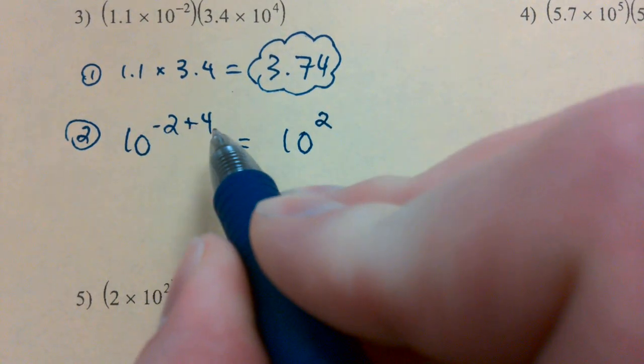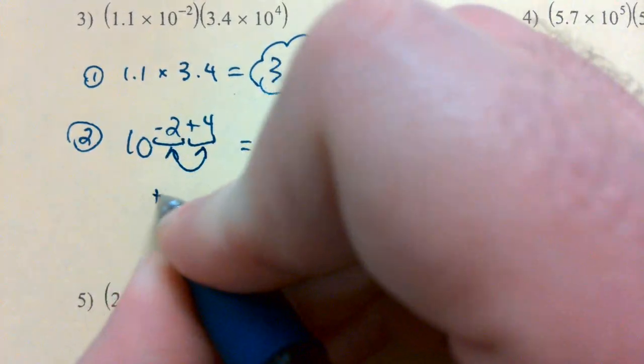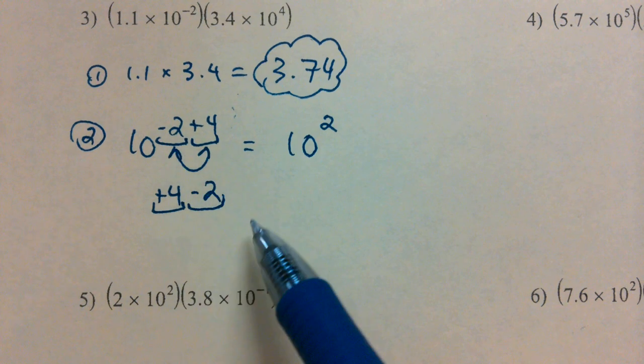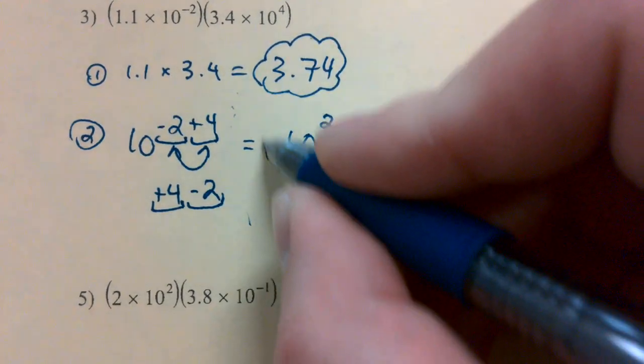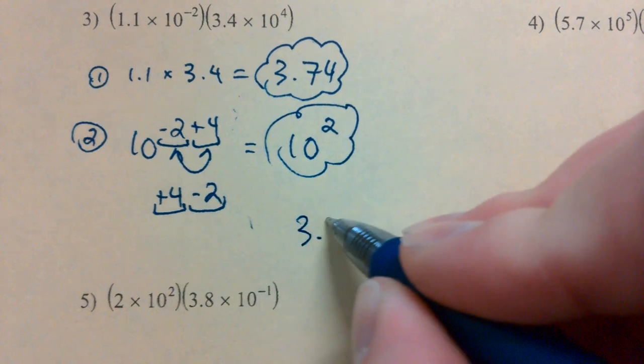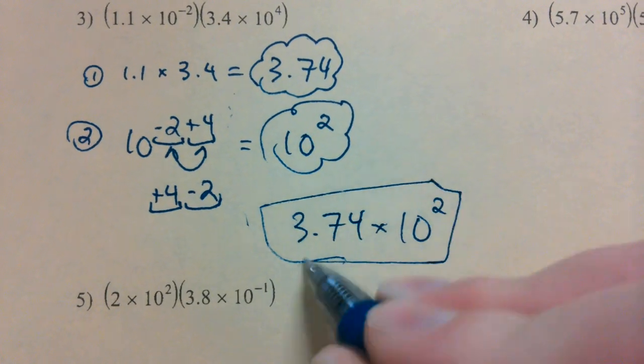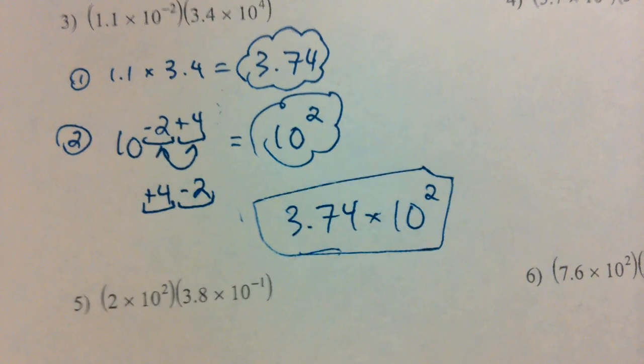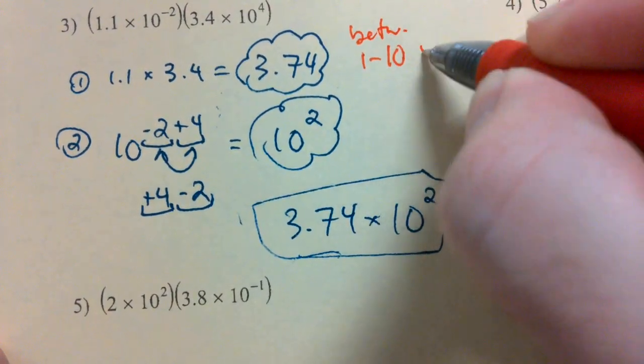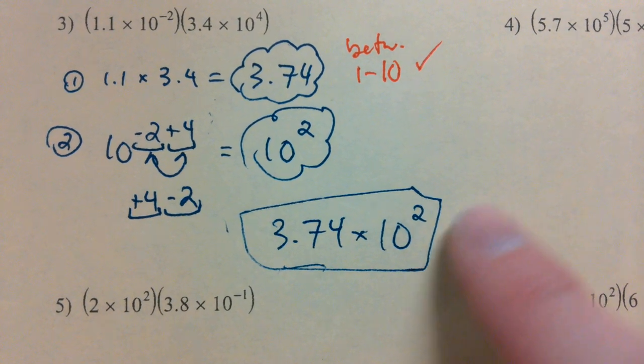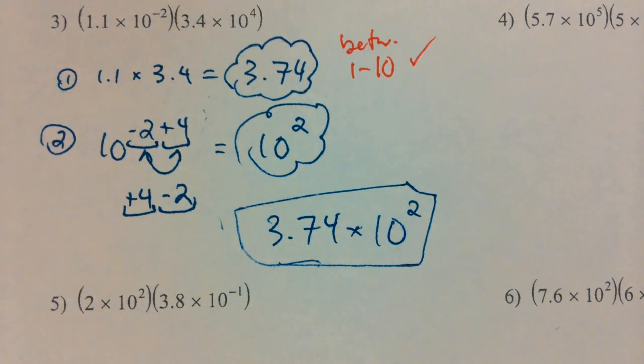10 to the 2nd power. Remember, negative 2 plus 4, if we were to swap these around, is the same as positive 4 minus 2. Right? We just took plus 4, brought it to the front. Minus 2, brought it to the back. 4 minus 2 gives us 2. New leading number, new power of 10, 3.74 times 10 to the power of 2, just like that.